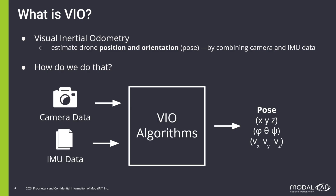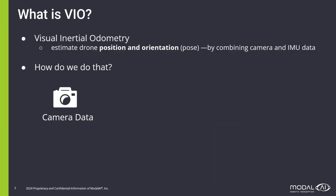Camera and IMU data is used as input to VIO algorithms, which then output a pose — position, orientation, and velocity estimation. One important thing to note is that when we talk about camera data, what we really mean is feature data.